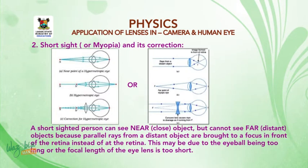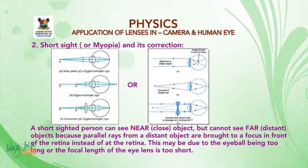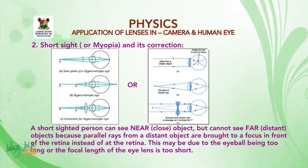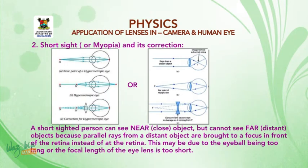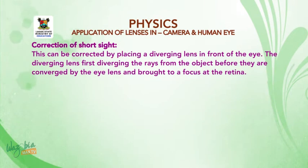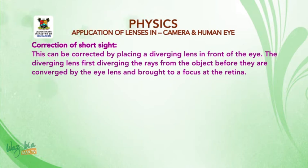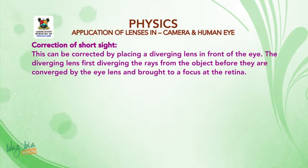The second defect: short sight, also known as myopia, and its correction. A short-sighted person can see near or close objects but cannot see far or distant objects, because parallel rays from a distant object are brought to a focus in front of the retina instead of at the retina. This may be due to the eyeball being too long or the focal length of the eye lens being too short. Correction: this can be corrected by placing a diverging lens in front of the eye. The diverging lens first diverges the rays from the object before they are converged by the eye lens and brought to a focus on the retina.